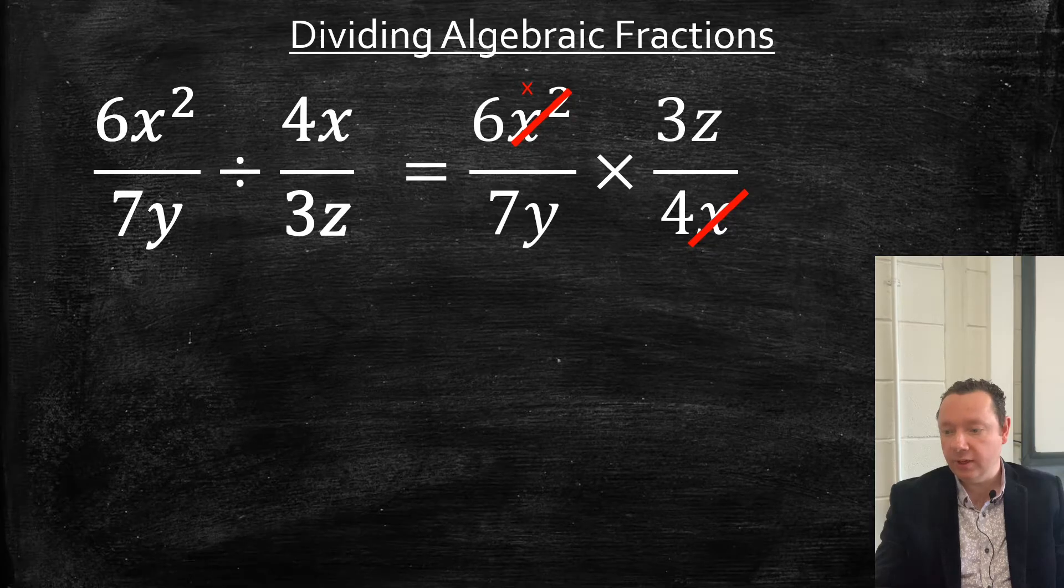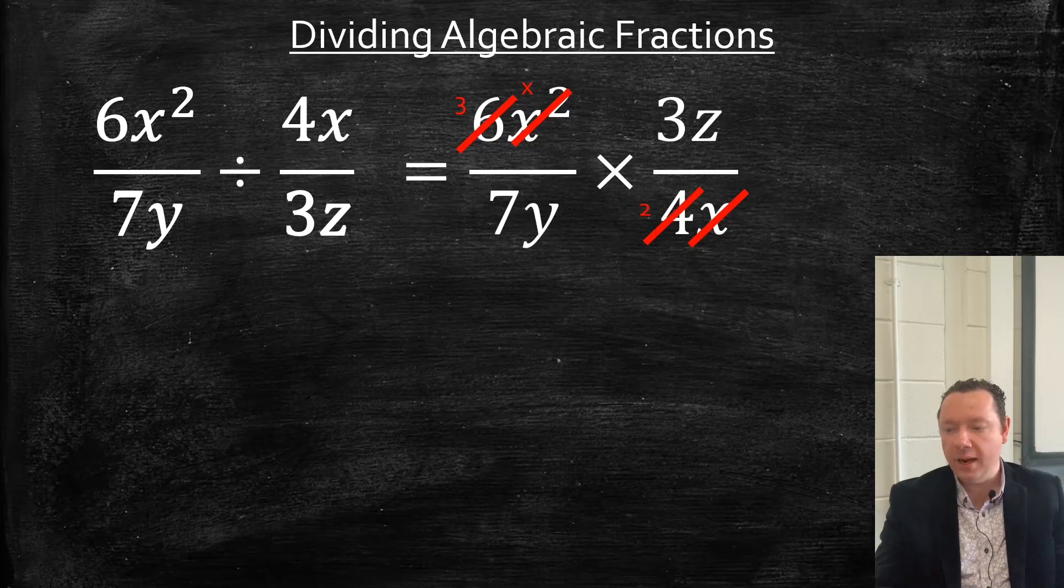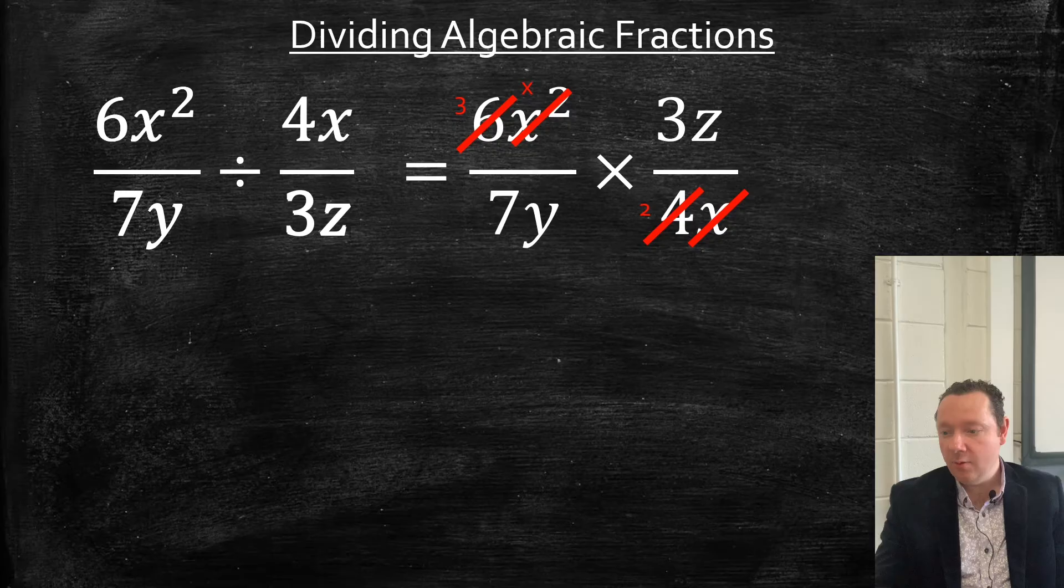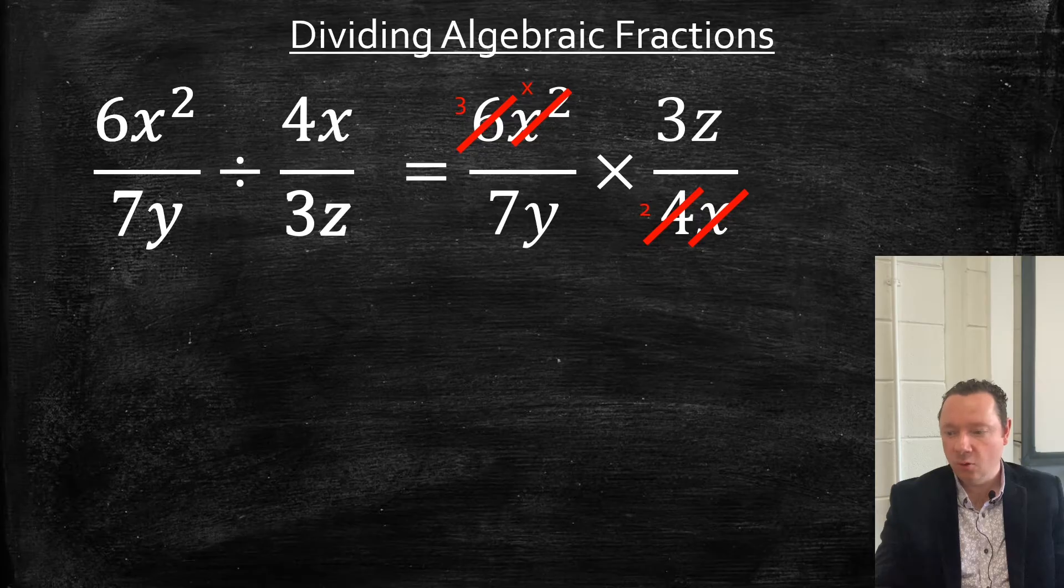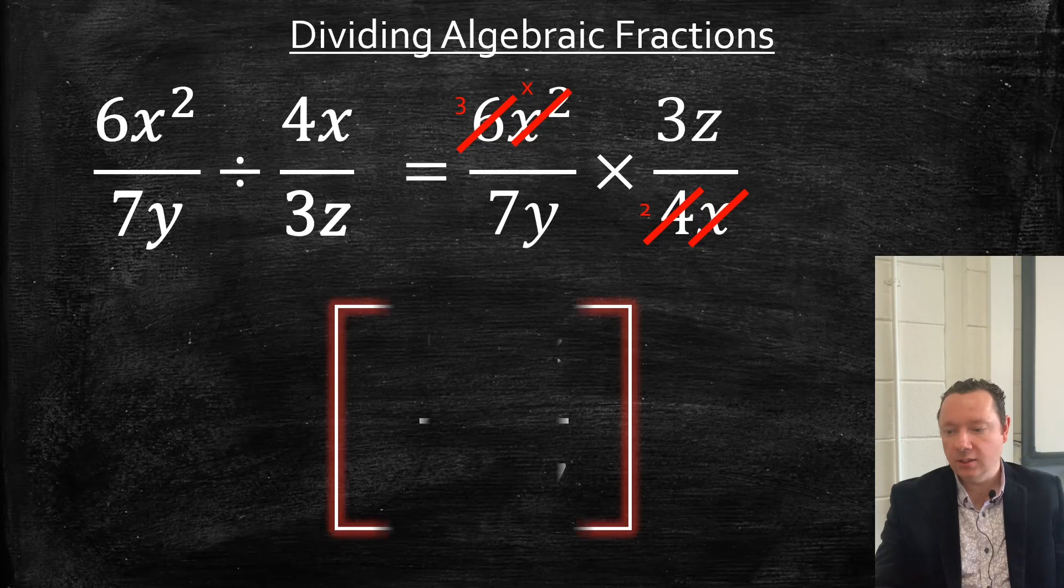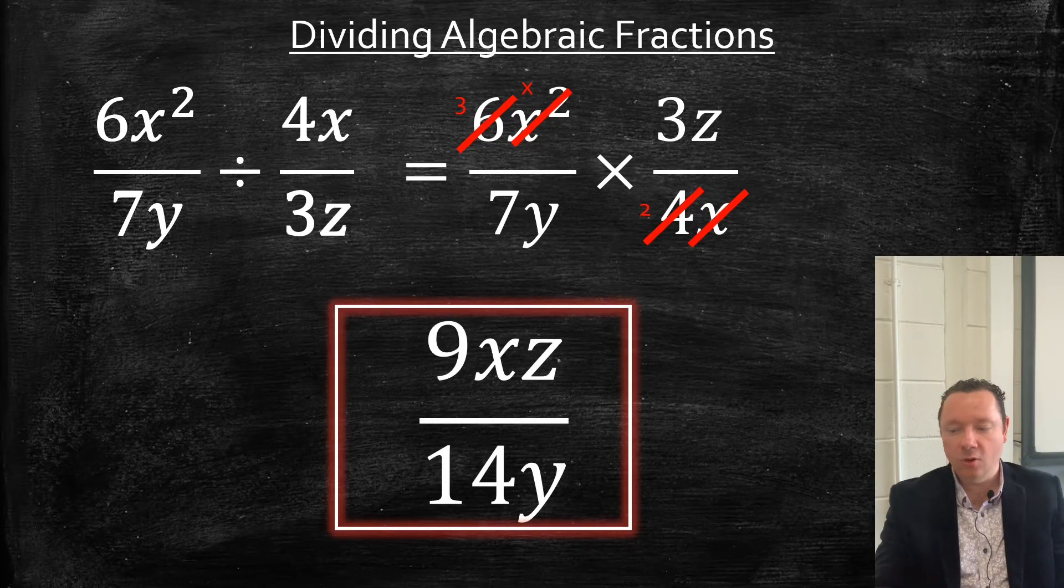And well, I don't think there's anything. Oh yes, so we can divide the 6 by 2 to get 3. Divide the 4 by 2 to get 2. So now just times in the top and we get 3 times 3 is 9xz. And times in the bottom we get 7 times 2 is 14y. Let's have a look. 9xz over 14y.